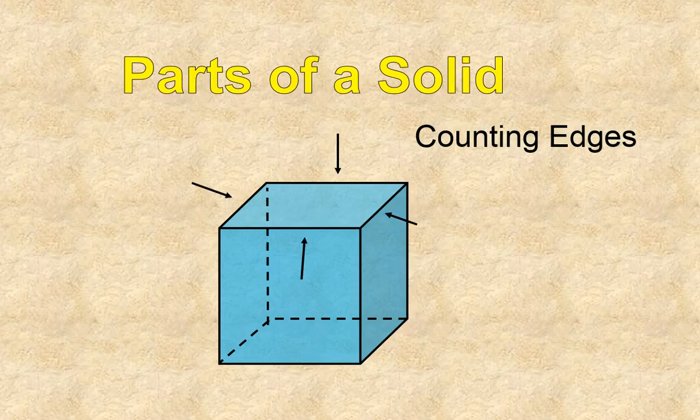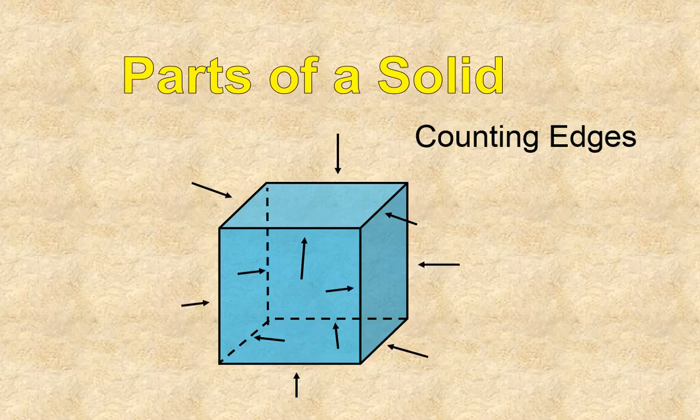There's one, two, three, four edges on the top of this solid. One, two, three, four edges on the bottom of this solid. And then we can't forget those upright edges. There, there, there, and there. So we have four on the top, four on the bottom, four around the edge. There are 12 edges in this solid.